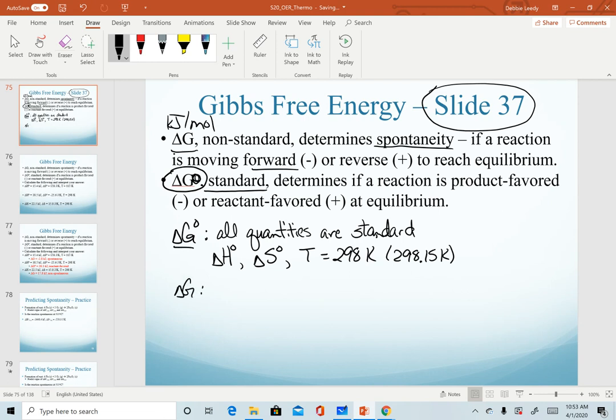All three of those quantities must be met in order for it to be standard free energy. If we're calculating non-standard free energy, if any one of those is non-standard, then we are calculating non-standard delta G. If temperature is not standard, we're calculating non-standard. If enthalpy or entropy is non-standard, then we're calculating the non-standard delta G.